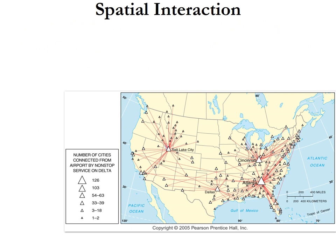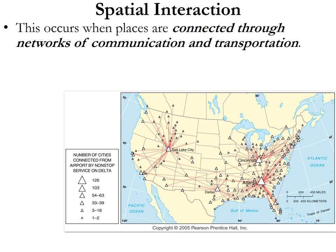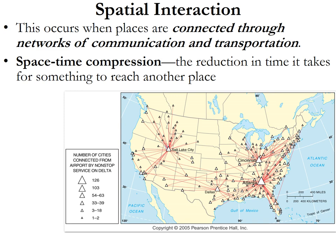When we talk about spatial interaction, we know that Tobler's Law is real, but we know we are more connected than ever before. We have communication and transportation networks linking all of us together, and we experience space-time compression — the reduction in the time it takes for something to reach another place. When my friend moved to Japan, because we have social media and communication technology, I can message that person anytime I want. So we have really obliterated the idea of Tobler's Law, or at least made it not so critical, because we have all these new technologies.